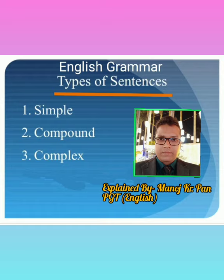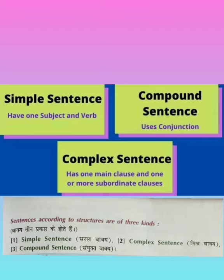After this lesson, you will be able to solve the problems. In English, there are three types of sentences according to structure. First is simple sentence, second is complex sentence, and the third is compound sentence.